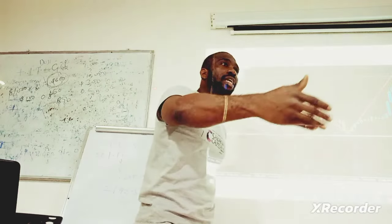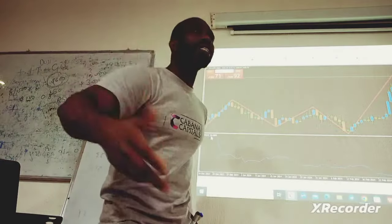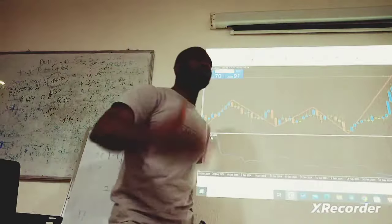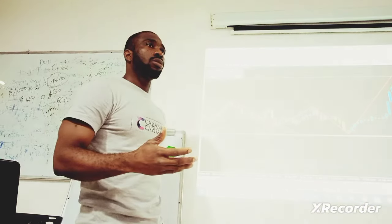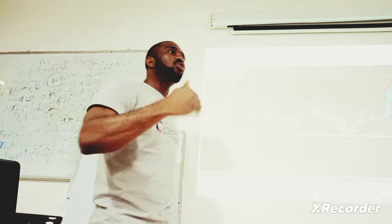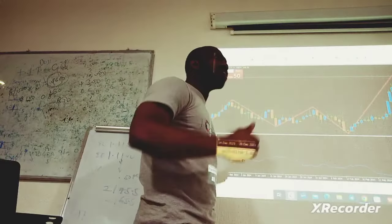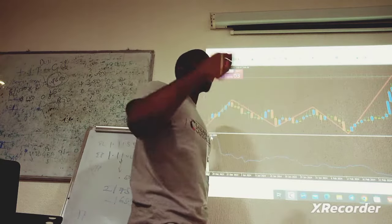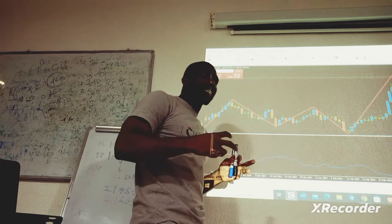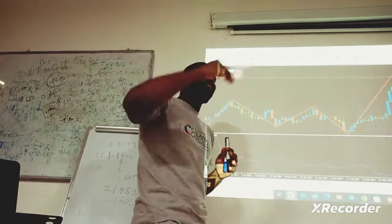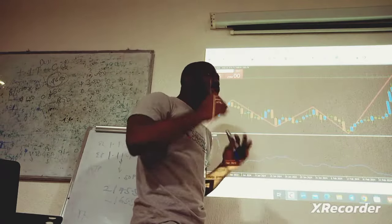When you open your chart and the market has already delivered 200 pips, what would you do? The Average True Range is 261. 261, that is the Average True Range. Now at the time you open the chart, the market has already delivered 200 pips. What would you do?